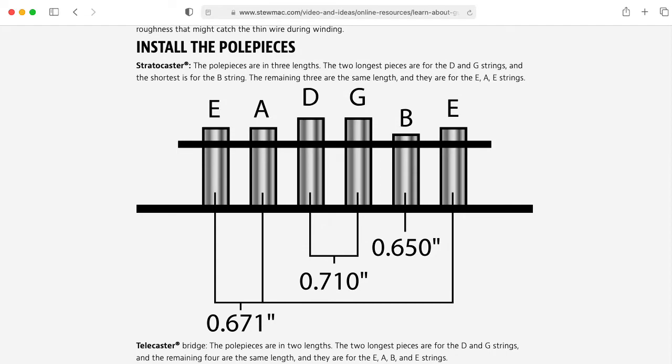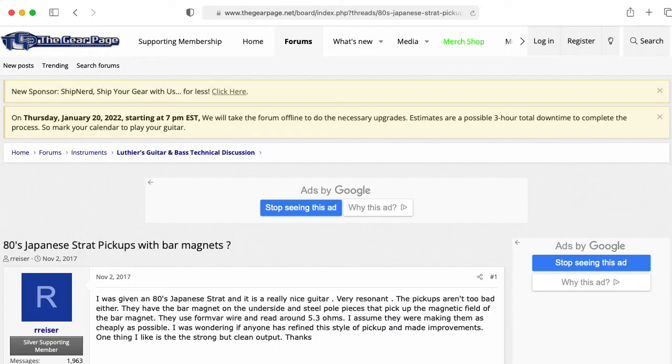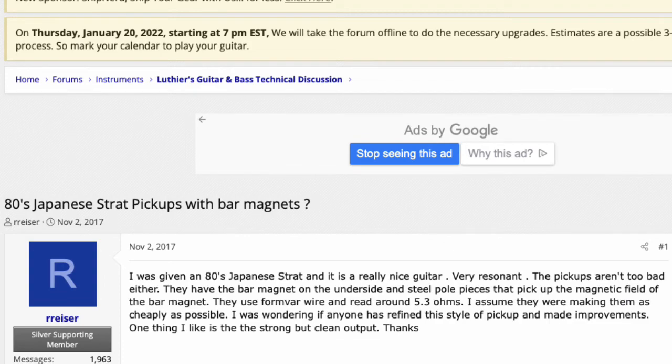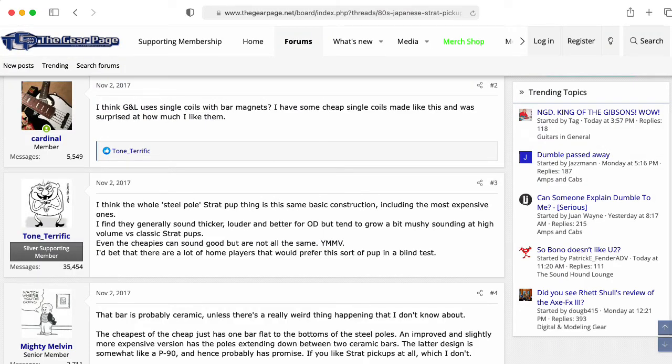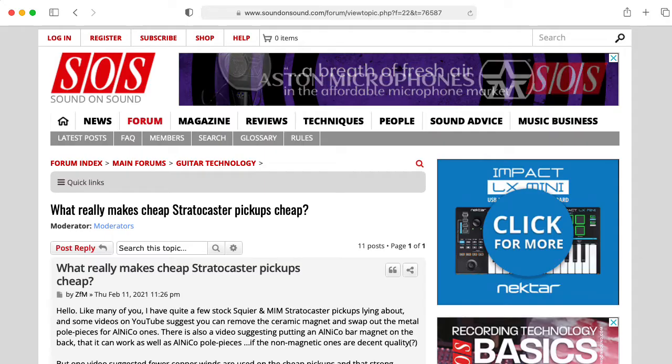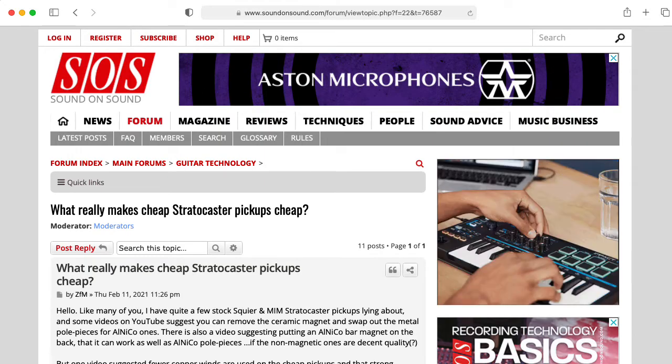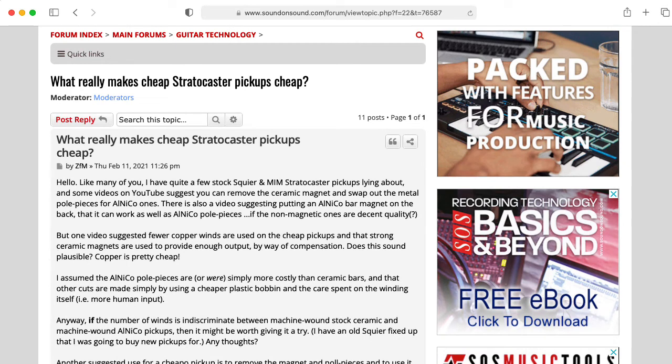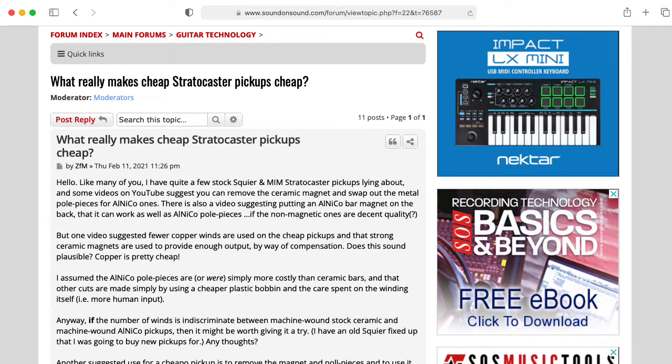What confused me on that is it looks like there's a lot of Telecasters and Stratocasters out there that have pickups with the bar magnet approach. So it looks like you'll see both out there. I don't know if the introduction of the bar magnet approach was part of cost savings or what, but there's many variations.